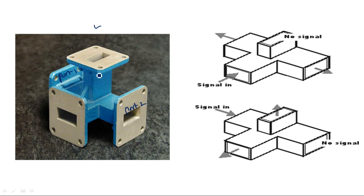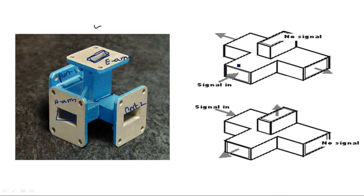Port 1 and port 2 are collinear ports. This is the E-arm and this one is the H-arm. The H-arm is connected in the narrower side, whereas the E-arm is connected in the wider side. In order to observe the characteristics of this E-arm and H-arm, suppose a Magic T is given to you and you don't know what is the E-arm and what is the H-arm. Since ports 1 and 2 are collinear, you can easily identify them as they are opposite to each other.